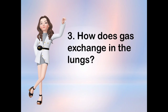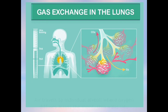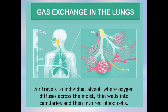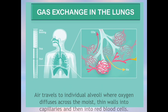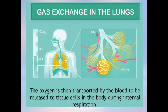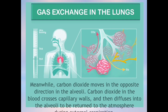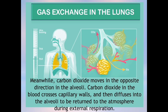How does gas exchange occur in the lungs? Air travels to individual alveoli where oxygen diffuses across the moist thin walls into capillaries, then into red blood cells. The oxygen is then transported by the blood to be released to tissue cells in the body during internal respiration. Meanwhile, carbon dioxide moves in the opposite direction in the alveoli. Carbon dioxide in the blood crosses capillary walls and then diffuses into the alveoli to be returned to the atmosphere during external respiration.